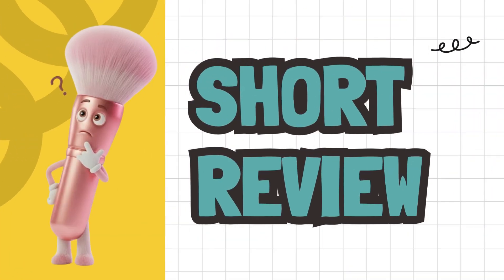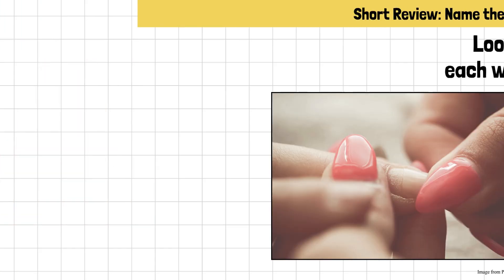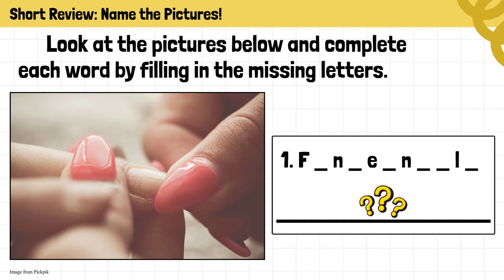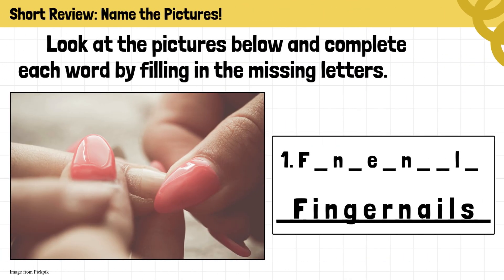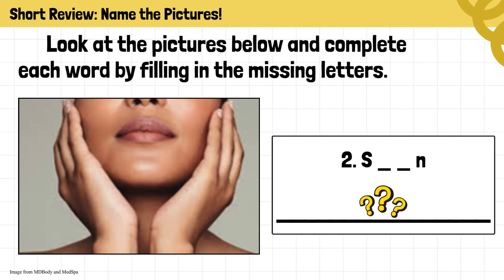Short review: let's begin our lesson with a short activity called Visual Discovery — Name the Pictures. Look at the pictures below and complete each word by filling in the missing letters. What do you think this first word is? Very good — fingernails! How about this one?